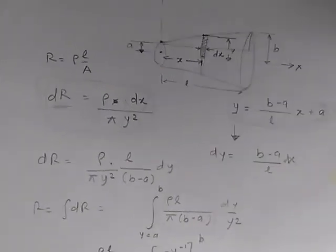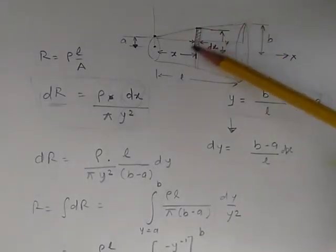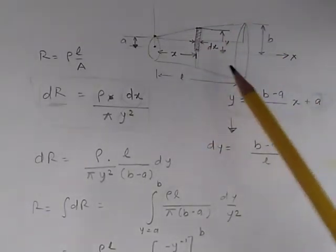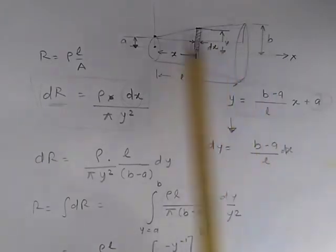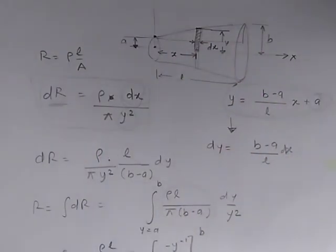The whole concept for solving all these continuous variable problems is to find a result for an infinitesimally small thin area, express it in terms of everything else—constants and variables—and then integrate the whole equation.